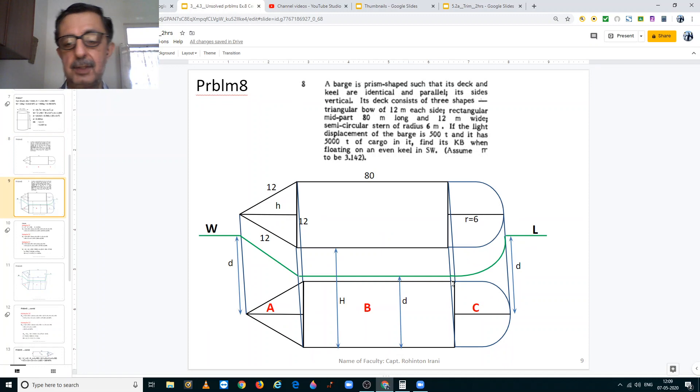Now I have drawn the same picture for you in a three dimensional format. And I am going to introduce the water line in this case. H is the height from the keel to the deck. And the small d is the draft at which the prism shaped vessel is floating. So let us see how it works out.